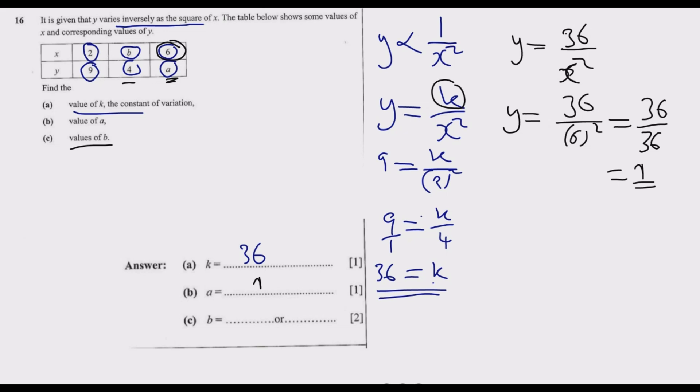Now for the values of B. We're looking for X now given that Y is equal to 4. So we have 4 is equal to 36 over B squared. Cross multiply: 4B squared is equal to 36. Divide by 4: B squared is equal to 9. Find the square root. Since the question asks for the values of B, there are two numbers that can multiply by themselves to get 9. So B is equal to positive or negative 3. Hence B equals negative 3 or positive 3.